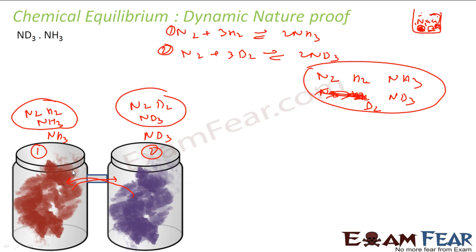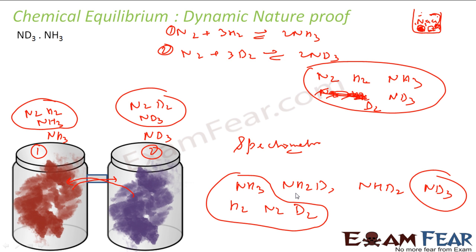But using spectrometer, scientists have seen that after some time, the chemical compounds which these two mixed beakers had was NH3 expected, and NH2D was there, NHD2 was there, ND3 was there. H2 was there, N2 was there. These things we expected, but these two we didn't expect.